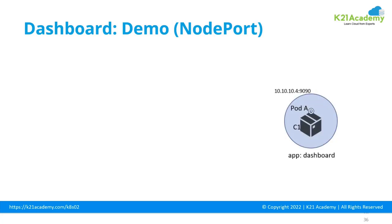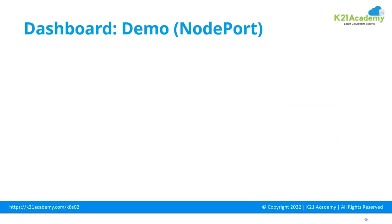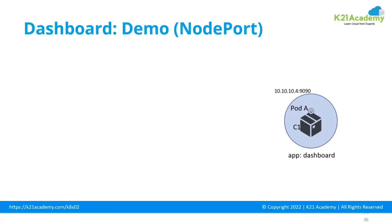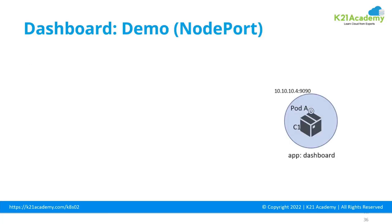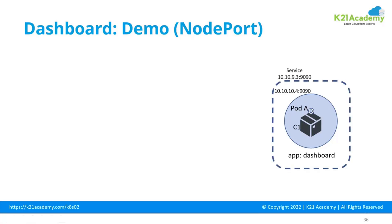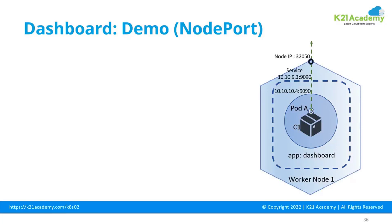For the demo part we are using NodePort. The dashboard is deployed as a pod inside the Kubernetes cluster, and like any other application you expose it through a service — which you'd typically do anyway. For this demo we are exposing it as a NodePort service. The container inside the pod listens on a port, that container is exposed through a service, and that service listens on a node and is accessed through the node IP.